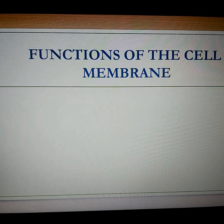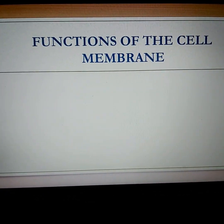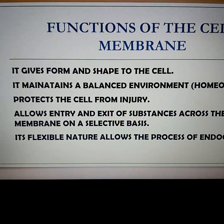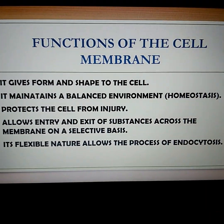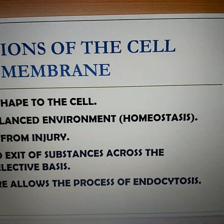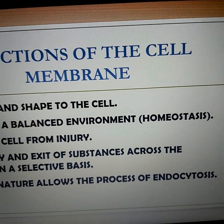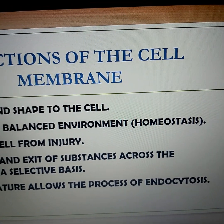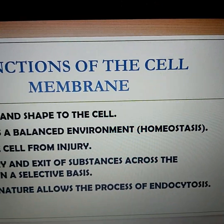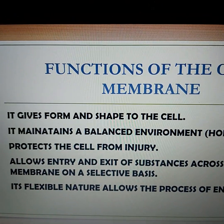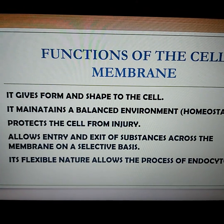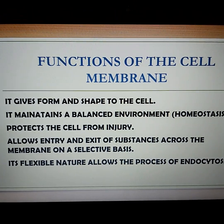Coming now to the functions of the cell membrane. The first and foremost function is that it gives form and shape to the cell. Secondly, it maintains a balanced environment called homeostasis. Every cell has a balanced environment within it, all attributed to the presence of the cell membrane. If the cell membrane ruptures, homeostasis is lost and cell death takes place.